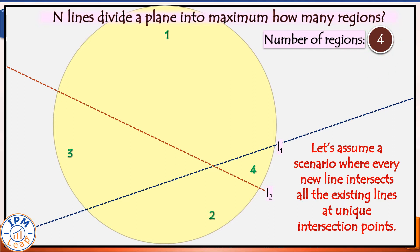When we draw the third line, it passes through these three regions, dividing each into two parts, thereby increasing three more regions in this plane. The total number of regions now is 4 plus 3, which is 7.